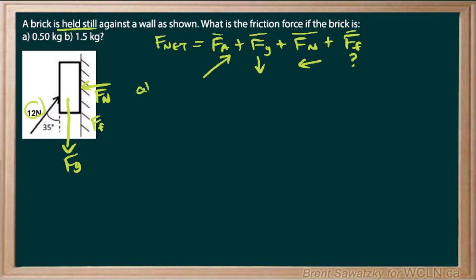So for part A, our weight of that brick, just being mg, would be, we're told 0.5 kilograms and 9.8 meters per second squared. And we calculate that 4.9 newtons. And we know that that would be downwards. Okay, so that's good.